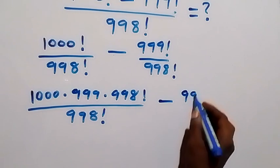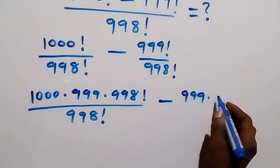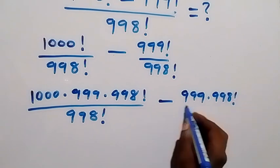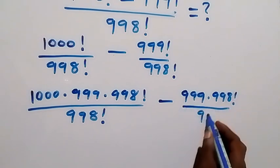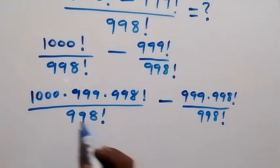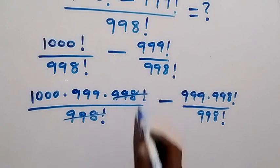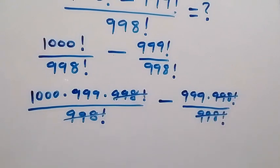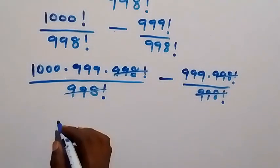Then from here, 998 factorial, we cancel out here. Also we cancel out from here. Then what we have left here will be 1000 multiplied by 999, then minus 999.